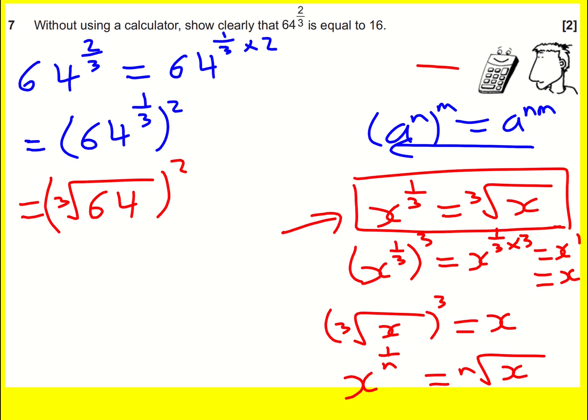To be honest, the third root, or the cube root, of 64 is actually 4, because 4 times 4 times 4 is 64. I still need to square it afterwards, and then I get my 16.